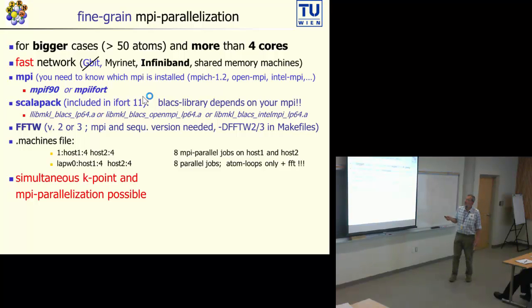For bigger cases, bigger means more than 50 atoms per unit cell, and good hardware means hardware with for sure more than four cores. A four-core parallel machine is not suitable really for fine-grained MPI parallelization.